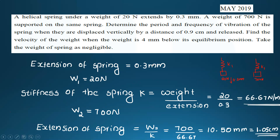The extension of the spring under 20 Newton is 0.3 mm. Stiffness k equals W divided by extension, giving 66.67 Newton per mm. The static deflection under 700 Newton is W₂ divided by k, equal to 700 divided by 66.67, equal to 10.50 mm.